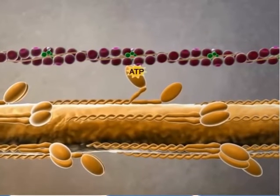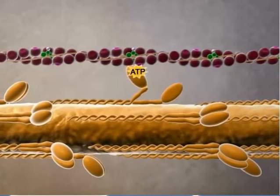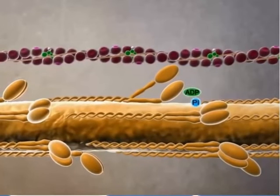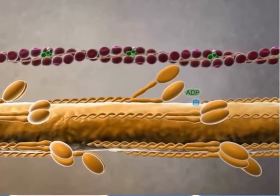ATP then binds again to myosin and it detaches from actin. ATP breaks down into ADP and phosphate and the myosin head cocks back.